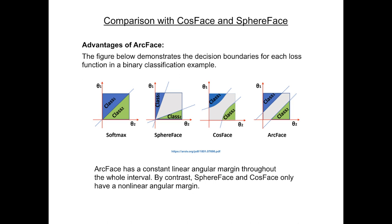ArcFace's decision margin is best, creating a constant linear angular margin throughout the whole interval. This is due to ArcFace's additive angular margin having the exact correspondence to the geodesic distance. SphereFace and CosFace, on the other hand, only have a non-linear angular margin.